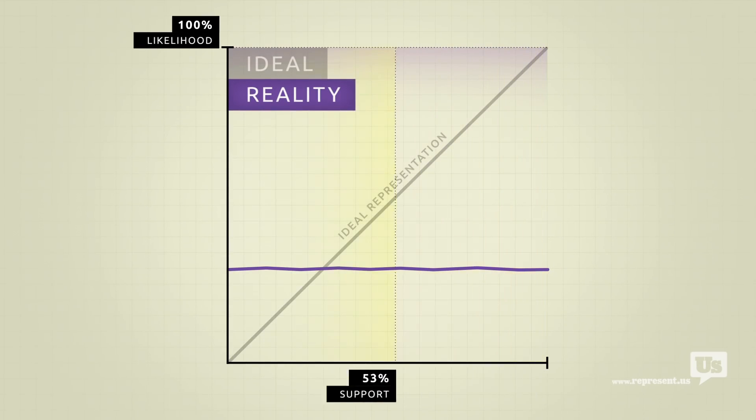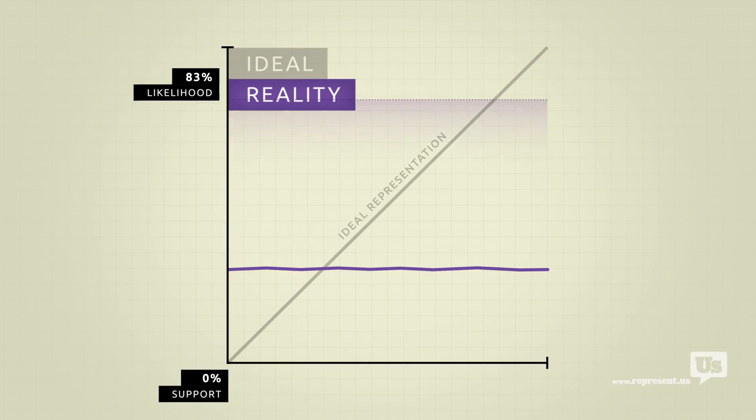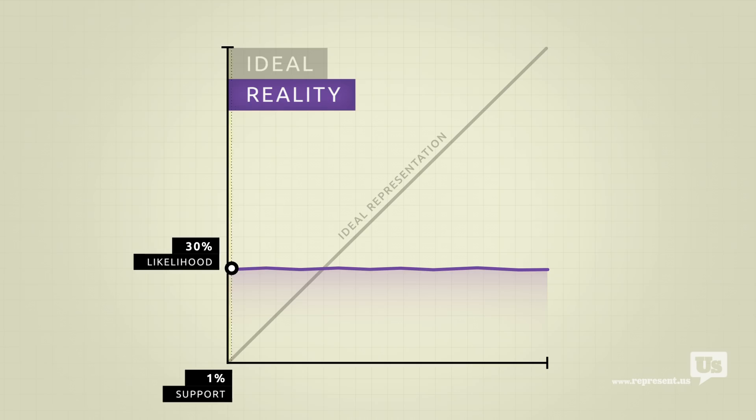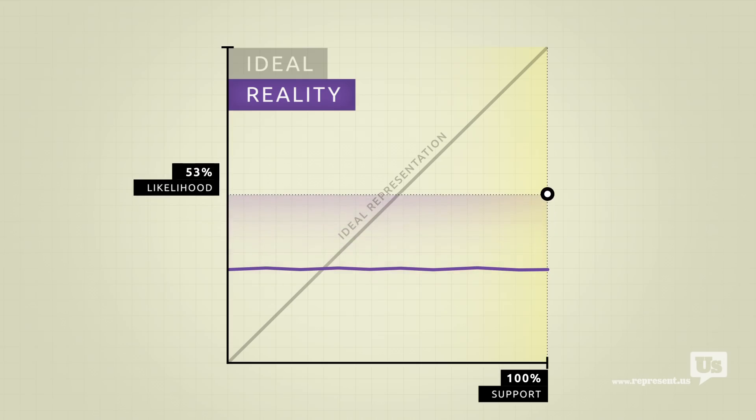Take an idea that nobody supports, literally nobody, and it has about a 30% chance of becoming federal law. Now, take an incredibly popular idea, the most popular idea this country has ever seen, and there's also about a 30% chance of it becoming law.